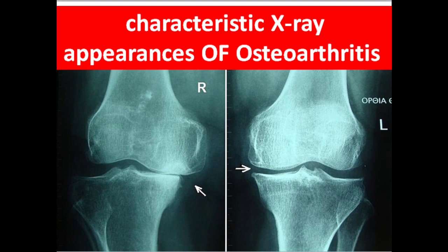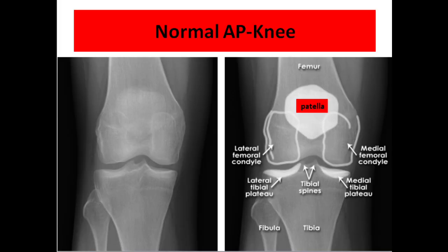Hello everybody. Today our video is about the characteristic X-ray appearances of osteoarthritis. Osteoarthritis can affect synovial joints; the hands, wrists, hips, knees, and feet are most commonly affected. First, we will take a look at a normal X-ray — for example, a normal anteroposterior view of the knee.